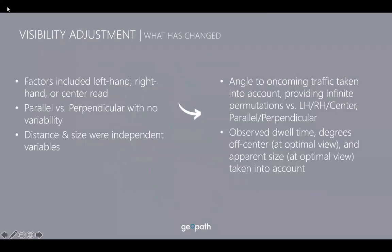To recap what has changed in the current visibility adjustment model: the angle of the out-of-home structure to the audience is now taken into account, providing infinite permutations to create the viewable area, as opposed to just general left and right-hand reads or parallel/perpendicular facings. Apparent size for the structure to the audience is also now taken into account, as opposed to previous models where distance from the audience and size of the structure were independent variables. We also plan to have a future webinar dedicated specifically to the visibility adjustment.